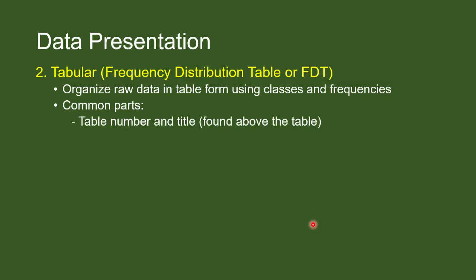First part is the table number and title. When we say title, it is a short phrase that describes what the table is all about. And this part is found above the table. Column header talks about the label of each column. What does each column represent? Row header is the label per row. What is that row referring to? And of course, the body. The body itself is the intersection of a certain row and a certain column that contains the data.